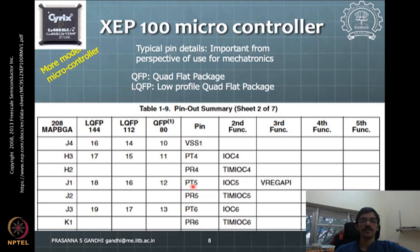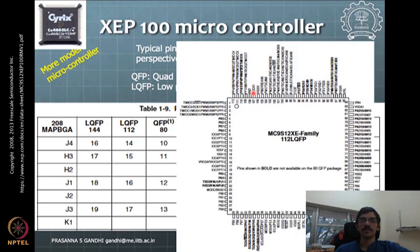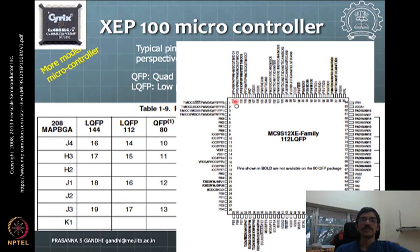Depending upon the package — for example LQFP, which is Low Profile Quad Flat Package — the chip is packaged and pins/terminals come out. An LQFP-144 means 144 pins are coming out. An LQFP-112 package will have 112 pins. Each package may be missing some pin-outs, so you need to see what you intend to program and then select the appropriate package for the microcontroller.